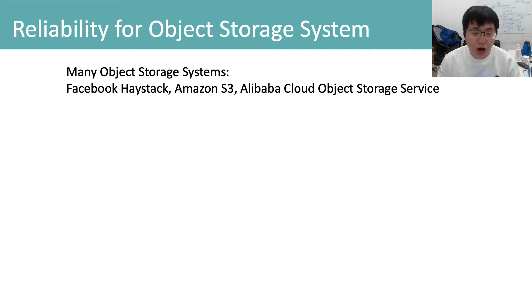Object storage systems such as Facebook Haystack, Amazon S3 and Alibaba Cloud Object Storage Service are widely used to store immutable binary large objects including photos, videos and documents.